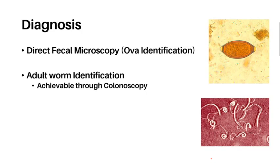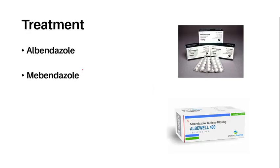Trituriasis is diagnosed in ways similar to that of Ascaris — through both adult and ova identification via fecal microscopy, and adult identification through colonoscopy. The treatment of trituriasis involves two anthelmintic drugs that interfere with the parasite's ability to assemble microtubules: albendazole and mebendazole.